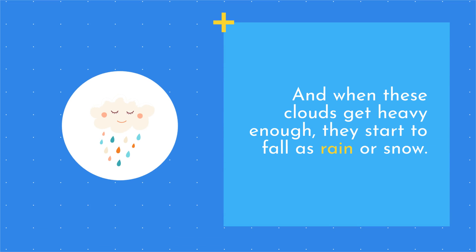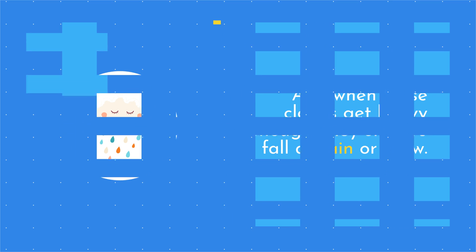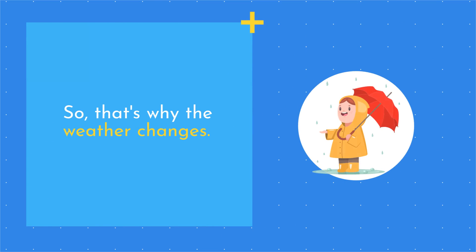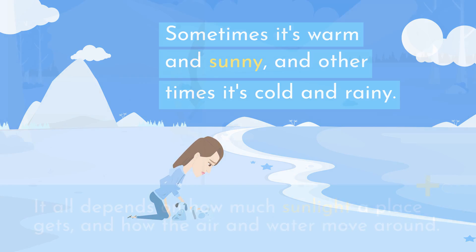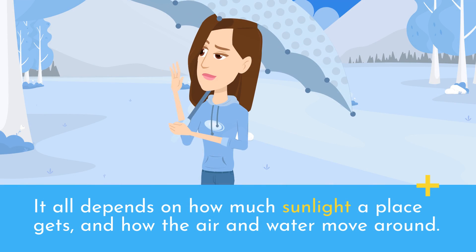And when these clouds get heavy enough, they start to fall as rain or snow. So that's why the weather changes. Sometimes it's warm and sunny, and other times it's cold and rainy. It all depends on how much sunlight a place gets, and how the air and water move around.